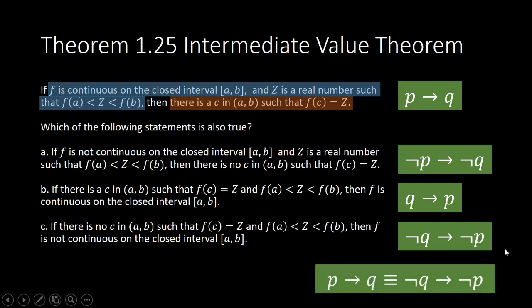It is the contrapositive. Statement c is equivalent to our statement p implies q. If there is no c in (a, b) such that f(c) equals Z, and Z is between f(a) and f(b), then f is not continuous on the closed interval [a, b].